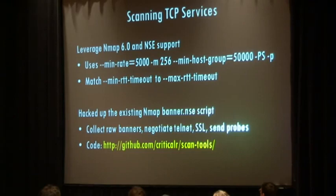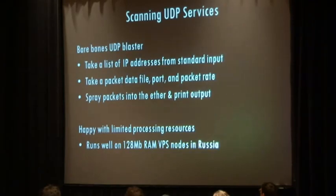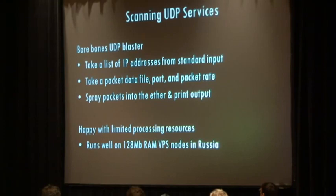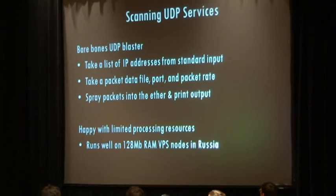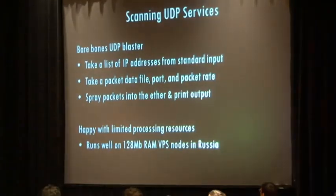All the tools I use to generate data are online at a GitHub URL — package generators, blasting tools, and so on. This bare-bones UDP blaster just spews packets at crazy rates and receives raw responses written back to stdout. You use it almost like a network pipe — feed it packets and IPs on one side, get responses on the other. You can scan an entire /8 — about 16.7 million IPs — in about a minute and a half.